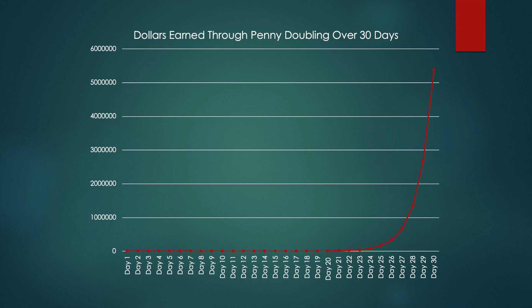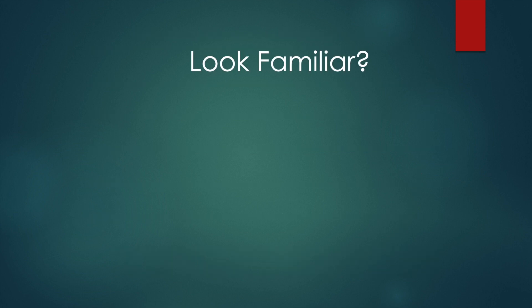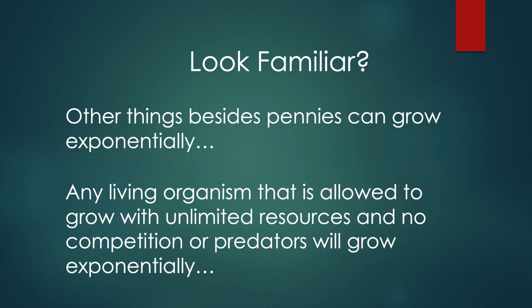Here we have a graph of the money earned on each day. It's the typical exponential growth graph, and it looks very familiar to us who are in the midst of experiencing the COVID-19 pandemic. We know that other things besides pennies can grow exponentially — any living organism that is allowed to grow with unlimited resources and no competition or predators will grow exponentially.